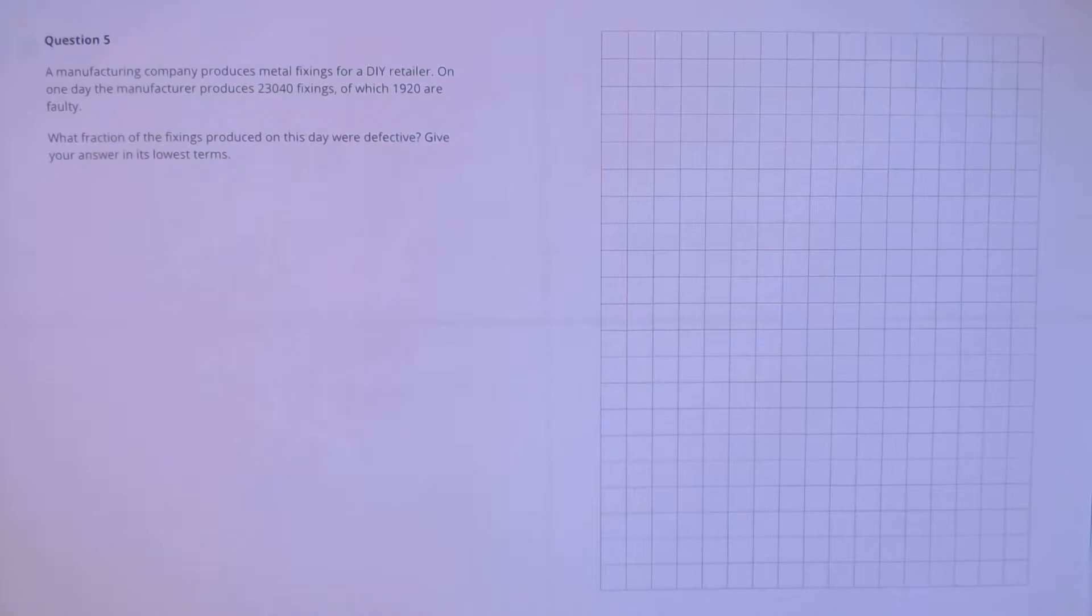Question 5. A manufacturing company produces metal fixings for a DIY retailer. On one day, the manufacturer produces 23,040 fixings, of which 1,920 are faulty. What fraction of the fixings produced on this day were defective? Give your answer in its lowest terms.